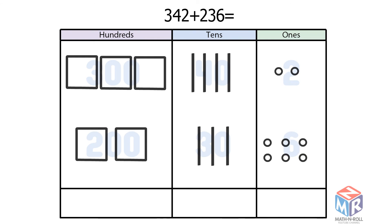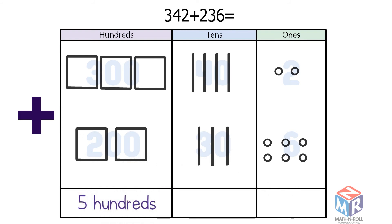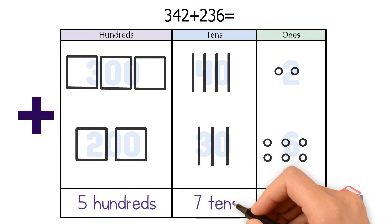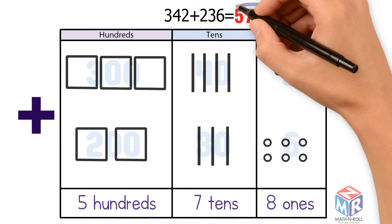Let's put them together. We have 5 squares, which are 5 hundreds, 7 bars, so we have 7 tens, and 8 circles, so we have 8 ones. So 342 plus 236 is equal to 578.